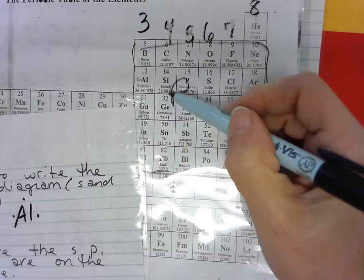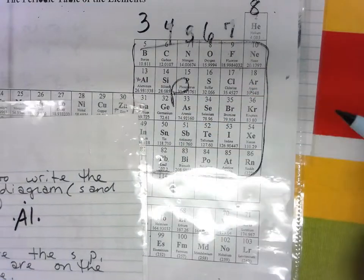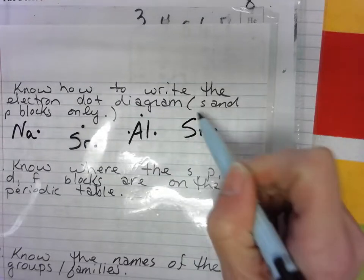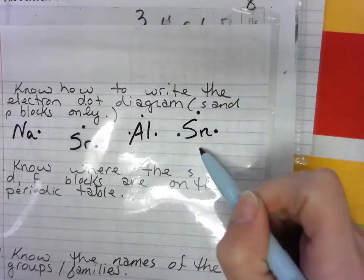Carbon family, let's just write tin Sn, four valence electrons. So one, two, three, four.